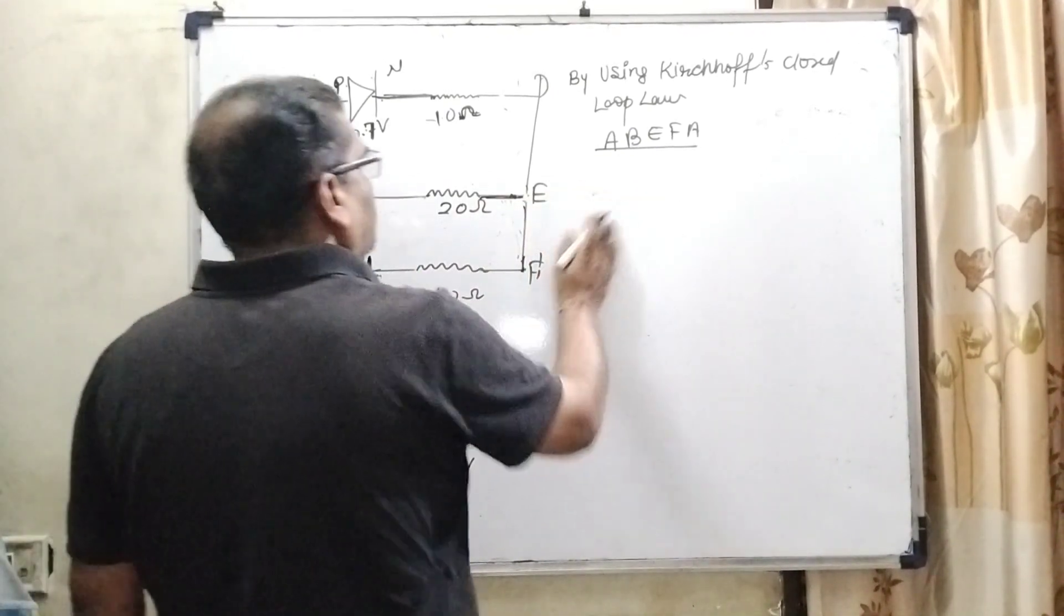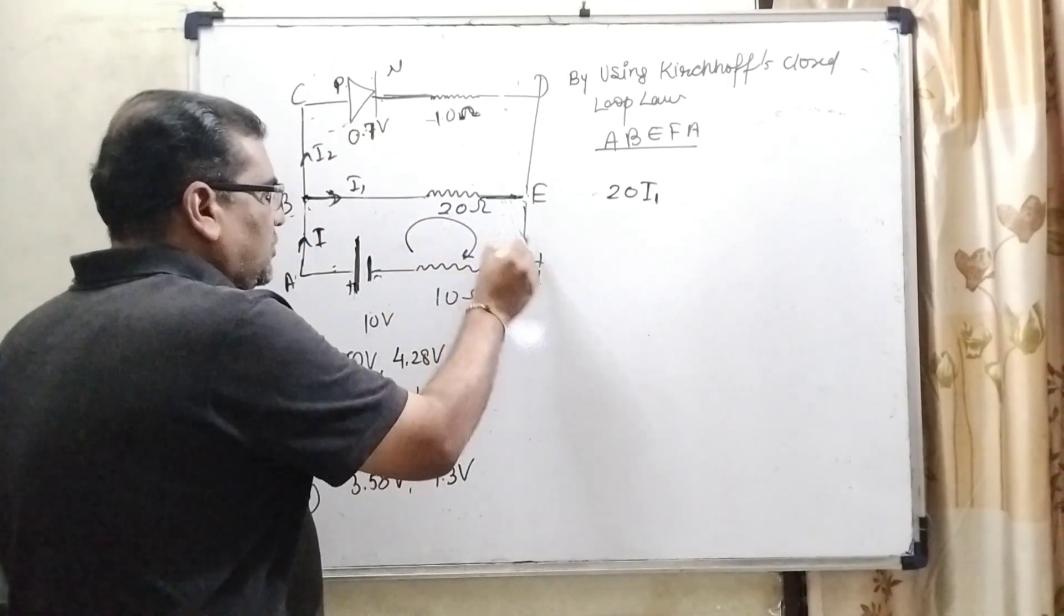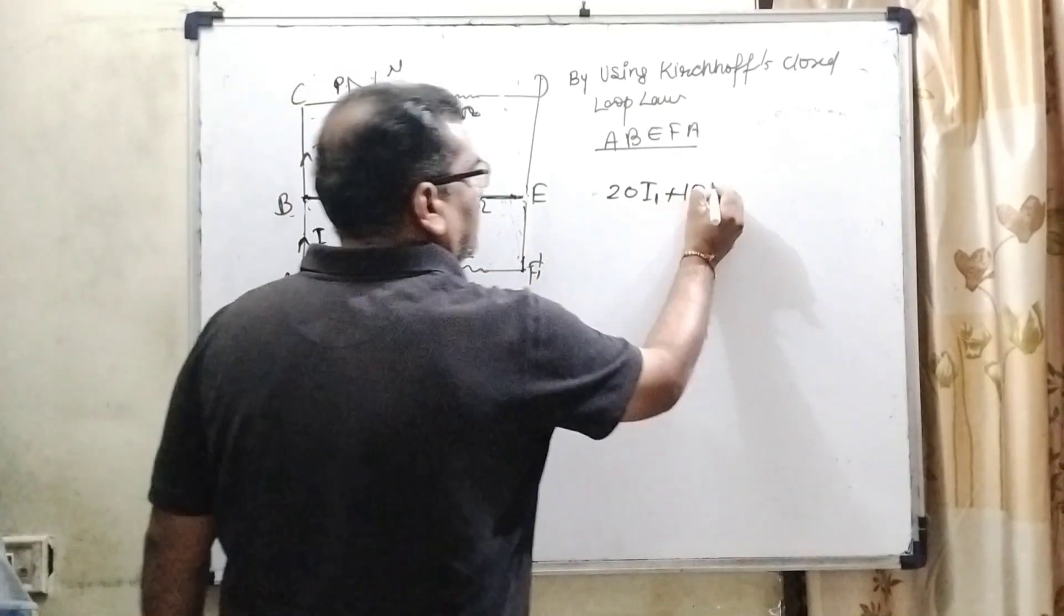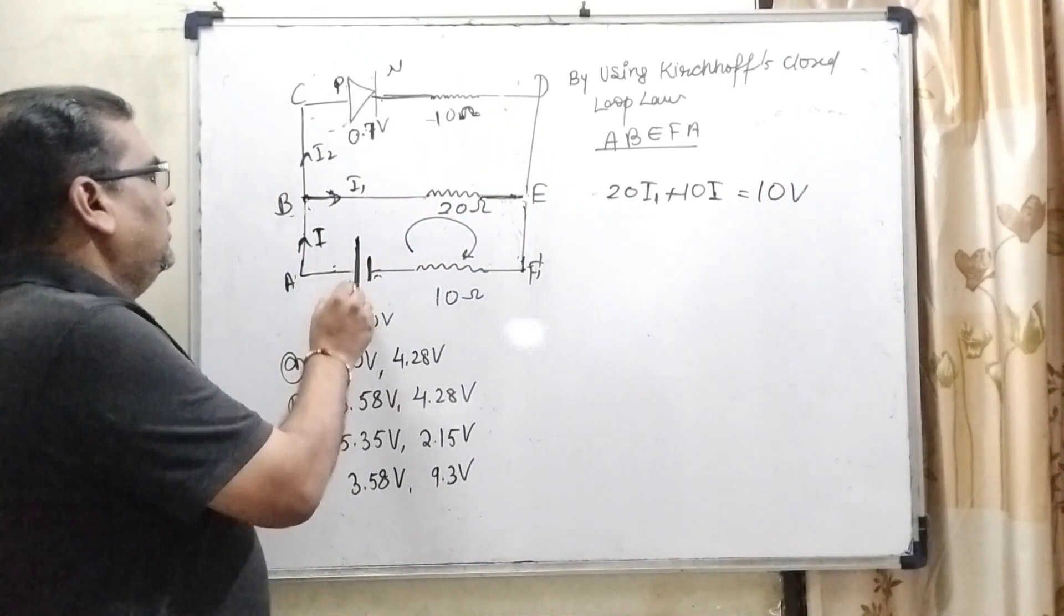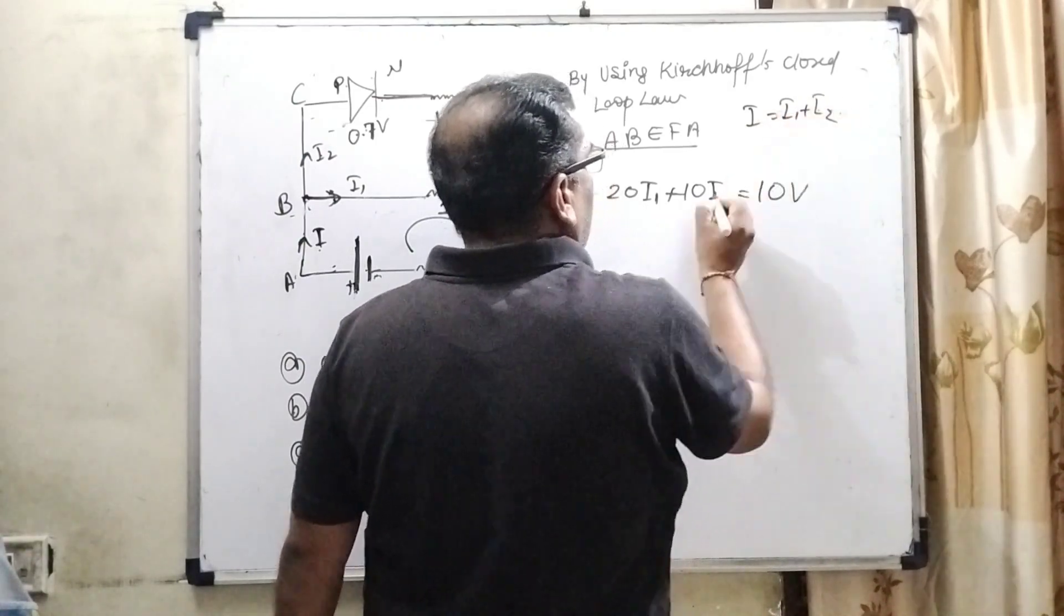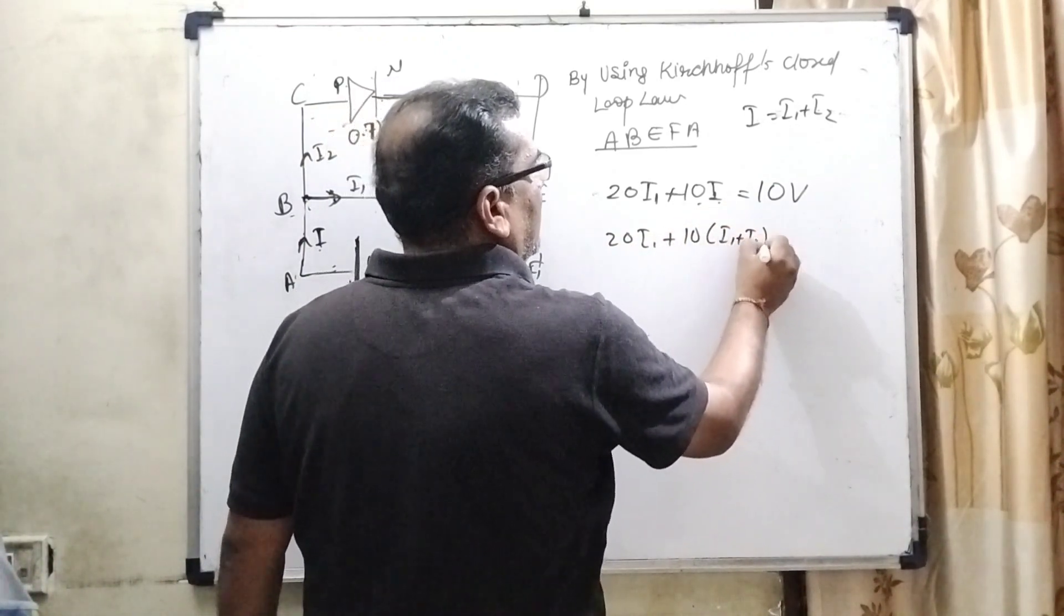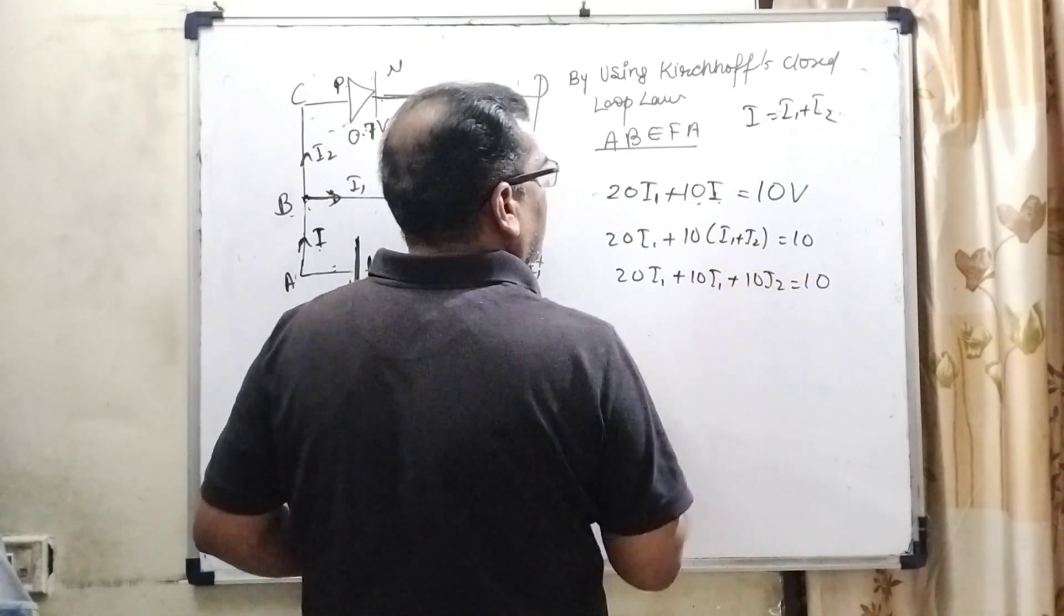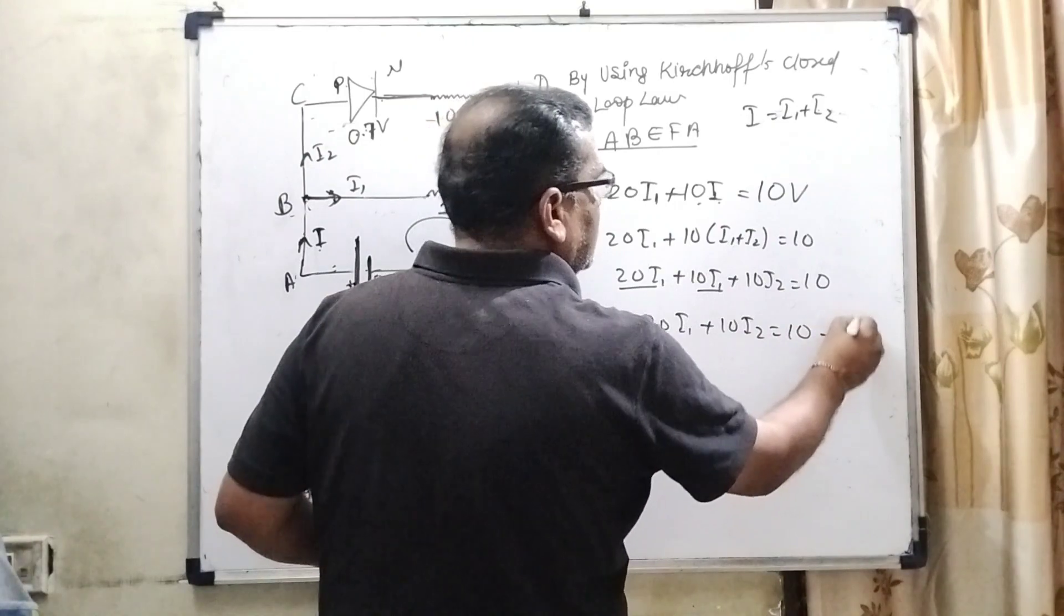So here I1 current and 20 ohm resistance, that is 20 times I1. And now it comes from F to A, here 10 ohm resistance and current is I. And what is the EMF present? 10 volt. According to the diagram we can see that this battery produces I current and it is divided into parts I1 and I2. It means I equals I1 plus I2. So now substitute the value of I in place of this: I1 plus I2 equals 10 volt. So here 20I1 plus 10I1 plus 10I2 equals 10. So here 20I1 and 10I1, 30I1 plus 10I2 equals 10. It is the first equation.